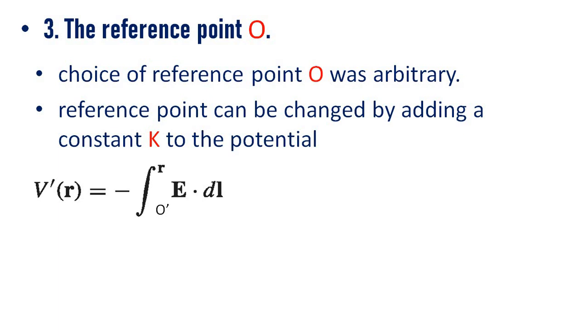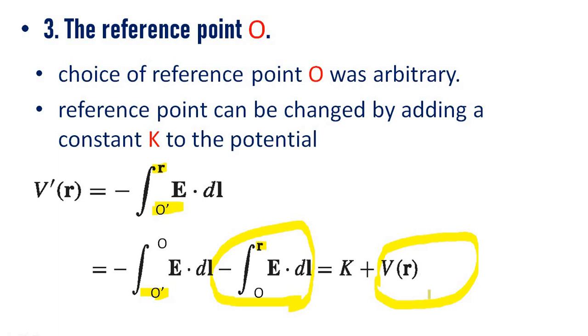We can write the equation like this: V prime of r equal to minus integral O prime to r E dot dl. Here we have the integral from O prime to r, that is, we can write O prime to O plus O to r. This is V of r.